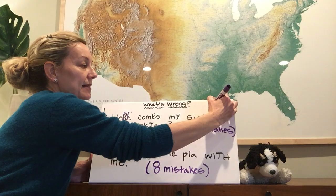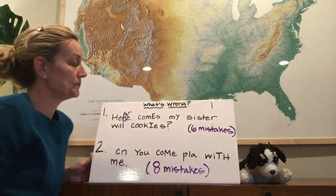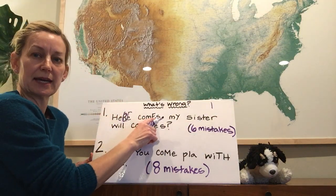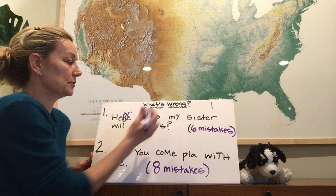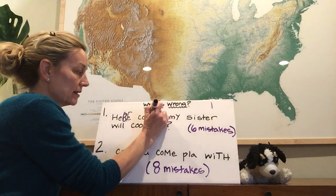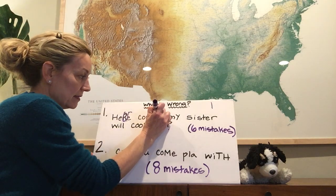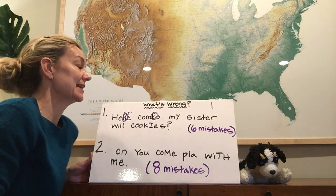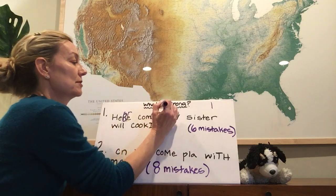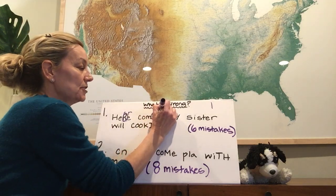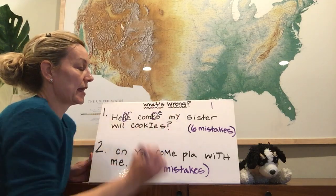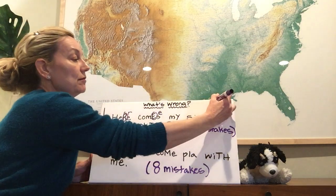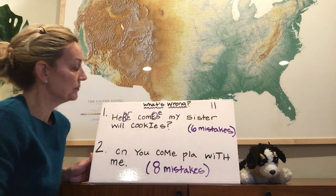I'm going to do my tallies over here. Here comes — oh, that looks kind of tall too. There's an uppercase E right again in the middle of a word. That should be a lowercase E. We have two already. Four more to go.